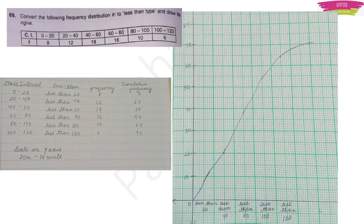Question 69: Convert the frequency distribution into less-than type and draw the ogive. Find cumulative frequencies: 8, 8+12=20, 20+18=38, 38+16=54, and so on. Plot these cumulative frequency values against the upper class limits on graph paper to get the ogive.